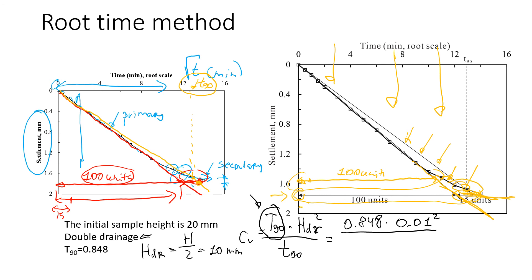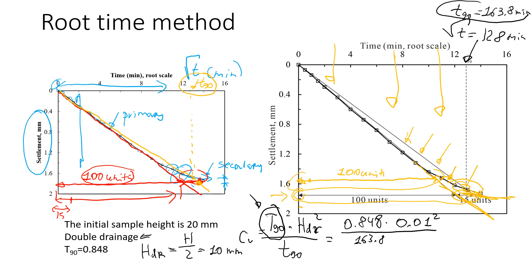From the graph, the square root of t90 reads approximately 12.8 minutes^(1/2), so t90 = 12.8² ≈ 163.8 minutes. Converting to seconds by multiplying by 60, the final result is approximately 8.6 × 10⁻⁹ square meters per second — the coefficient of consolidation for the second soil using the root time method.